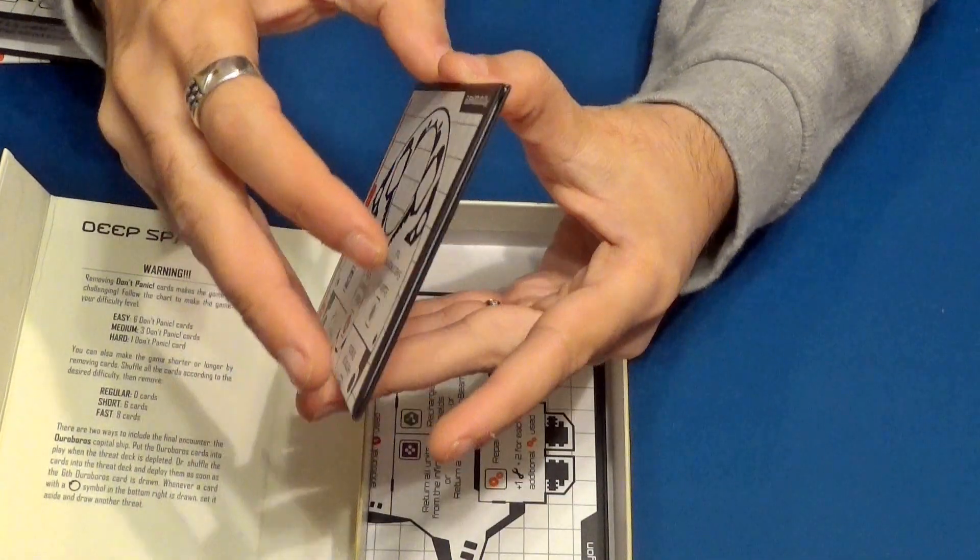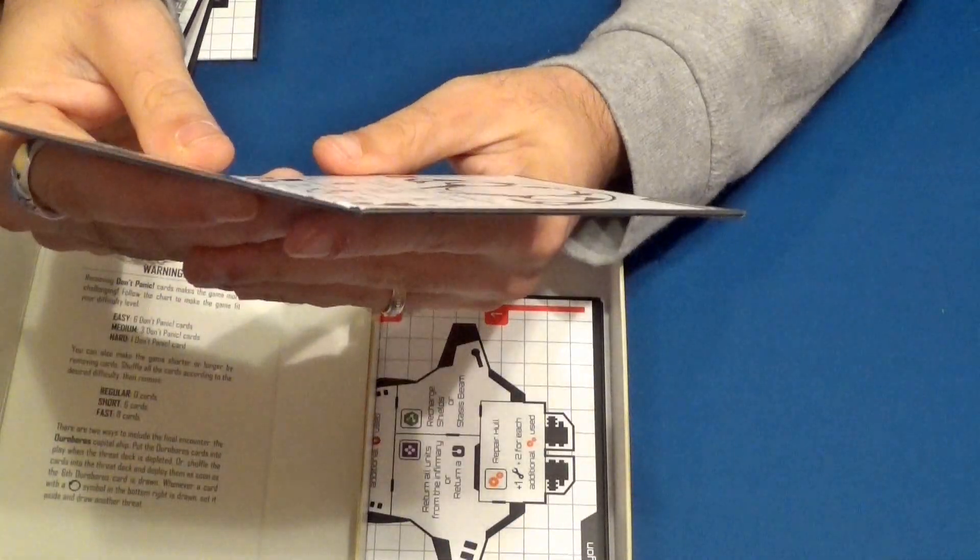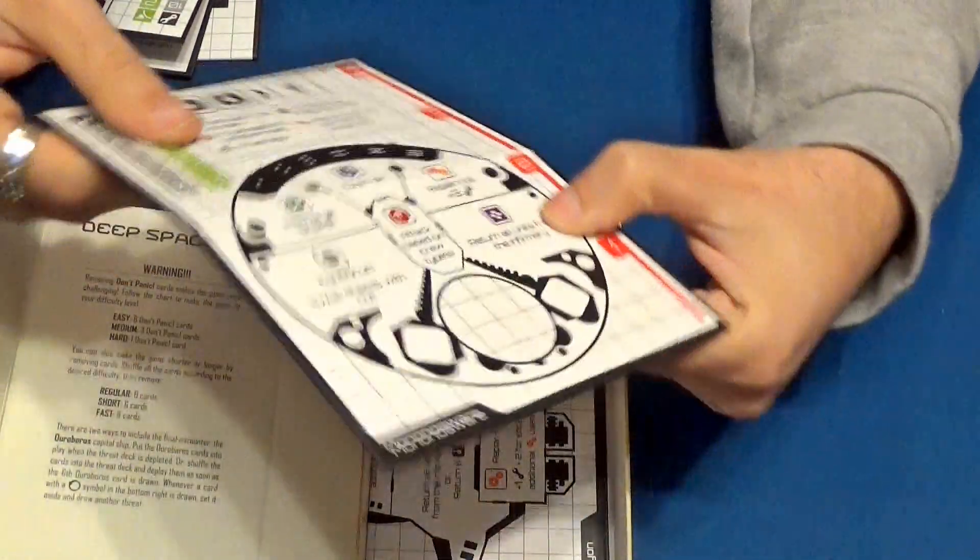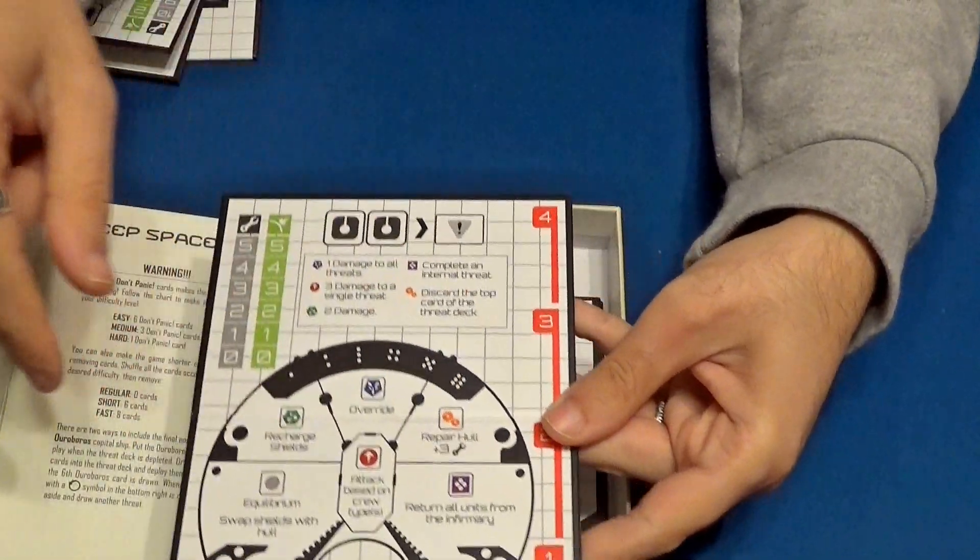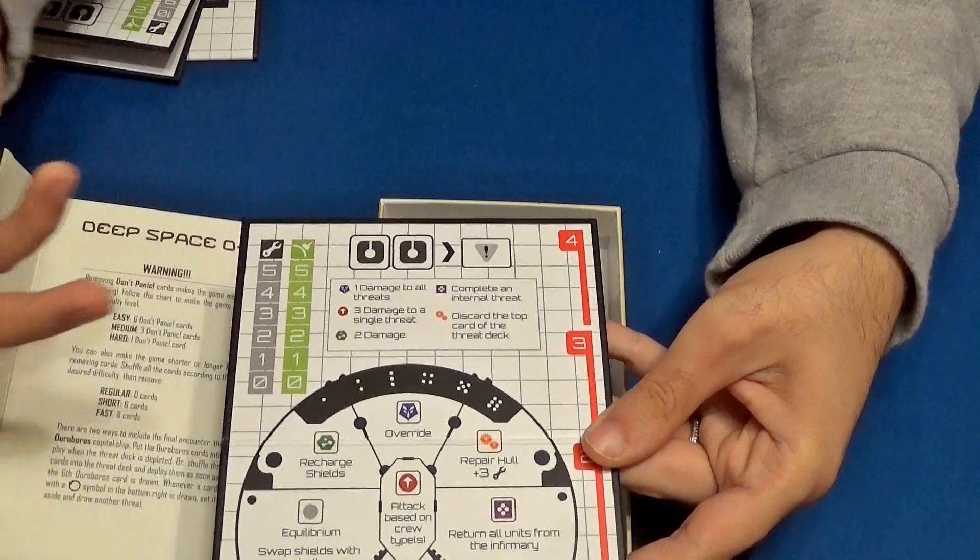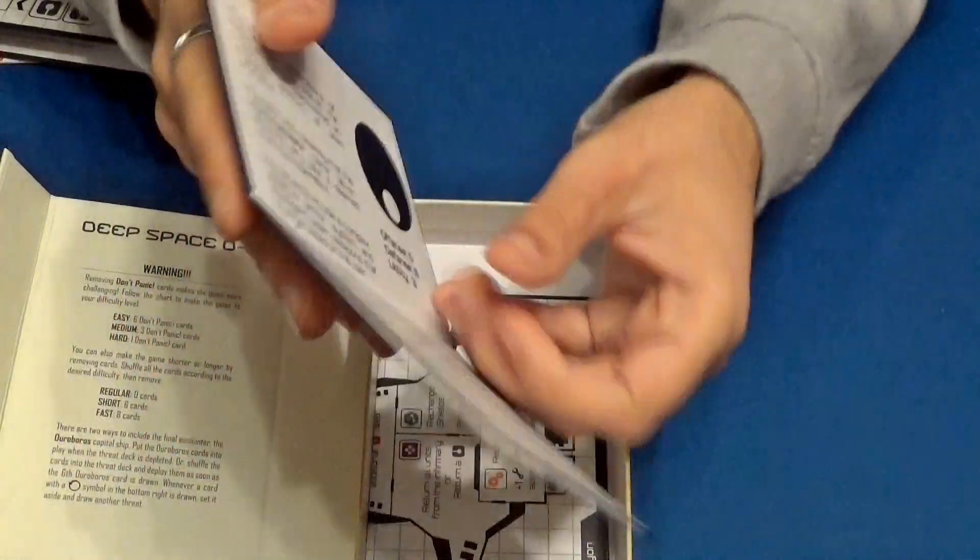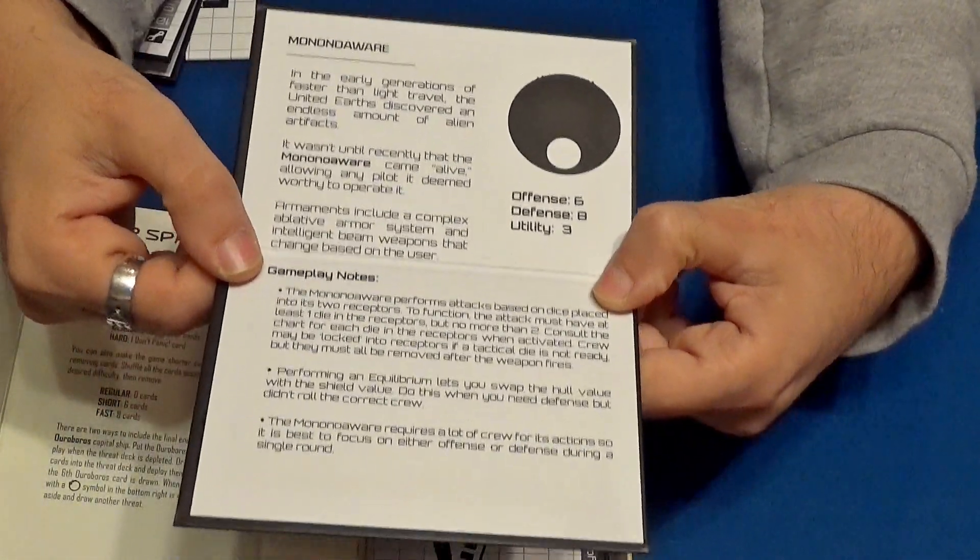Por esta zona tenemos otra nave. En este caso nos encontramos Uno Aware, que se llamaría así. Tenemos distintos sitios. Vemos que también es un poco así equilibrada. Y un poco de explicación de lo que es la nave aquí atrás. Lo cual está muy muy bien.